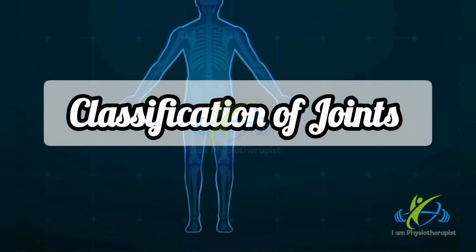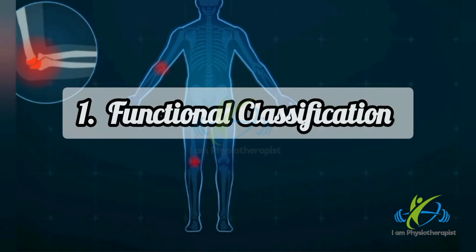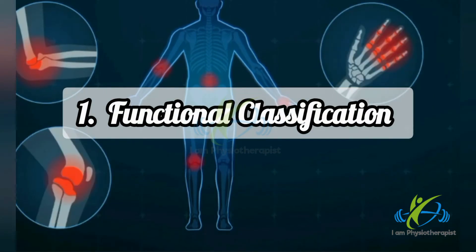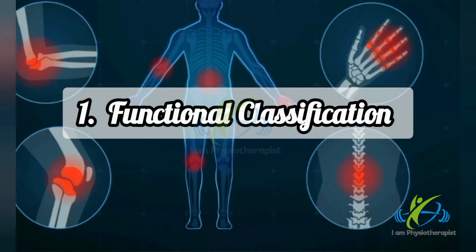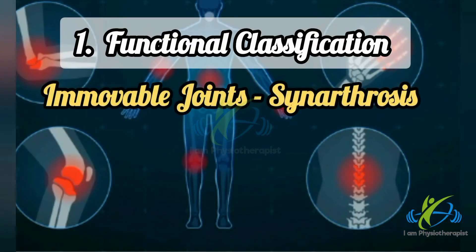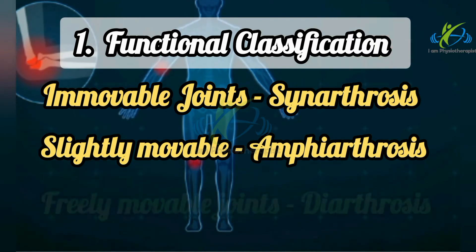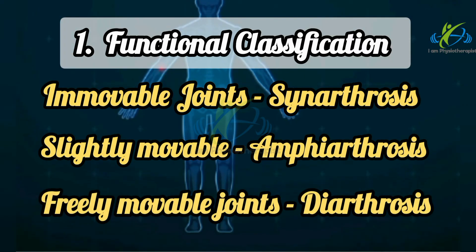Classification of Joints — Functional classification. According to the degree of mobility, joints are classified into three types: immovable joints, also known as synarthrosis; slightly movable joints, also known as amphiarthrosis; and freely movable joints, also known as diarthrosis.